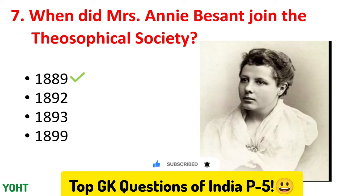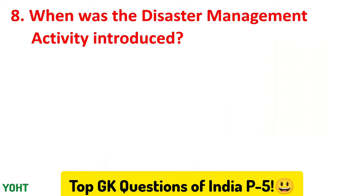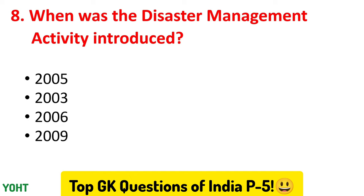Now let us move to the eighth question. When was the Disaster Management Act introduced? The options are 2005, 2003, 2006, and 2009. The correct answer to this question is option number one, 2005.